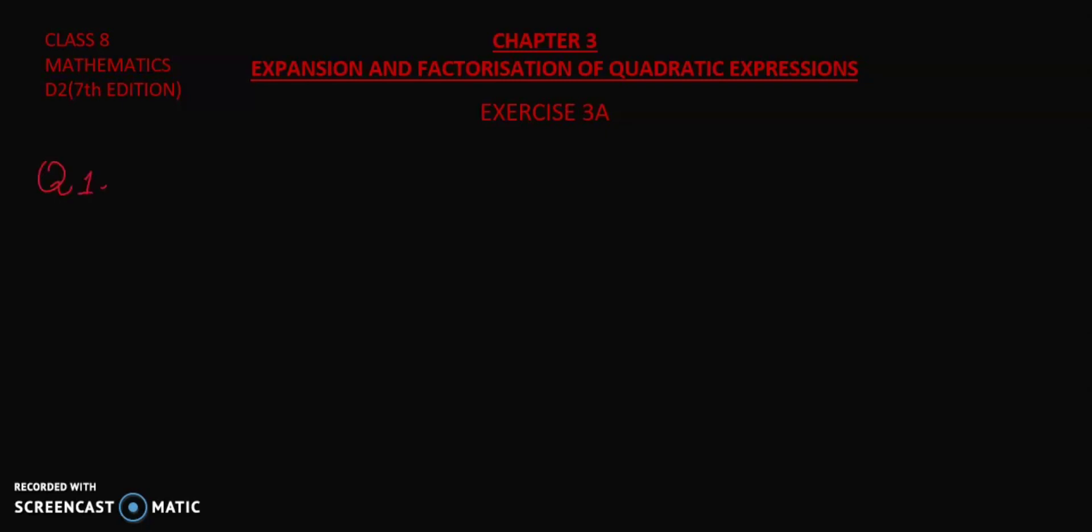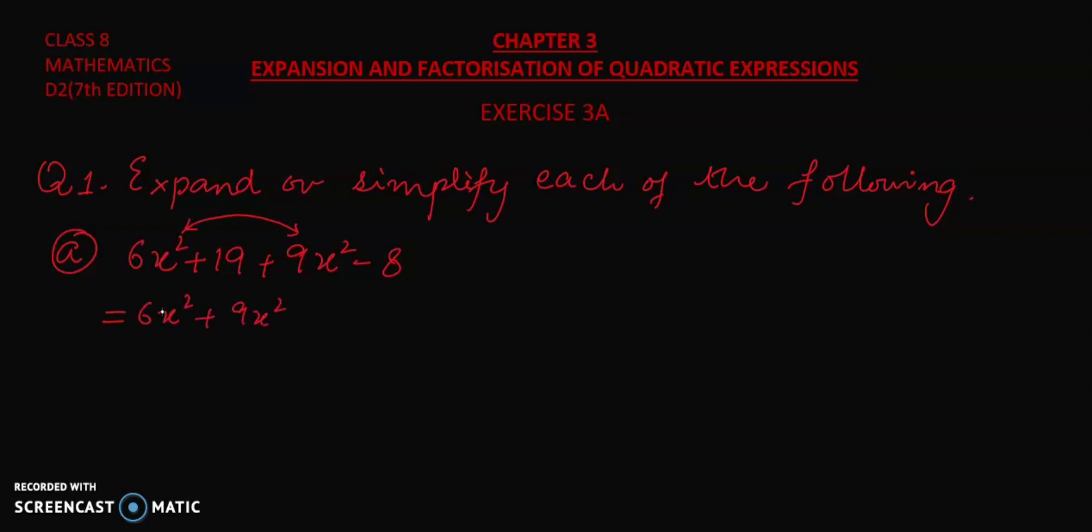We are going to start question number 1 which states expand or simplify each of the following. Now coming to part A, we have 6x square plus 19 plus 9x square minus 8. So what we have to do is that we will combine the like terms like this: 6x square plus 9x square, because they both have the same variable which is x raised to the power 2. That is why they are called the like terms.